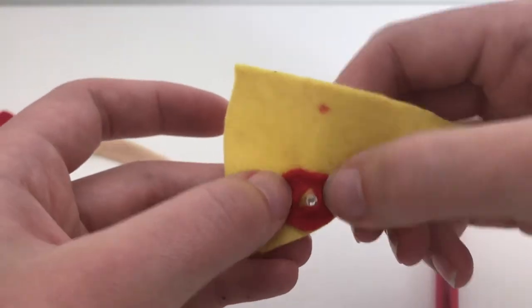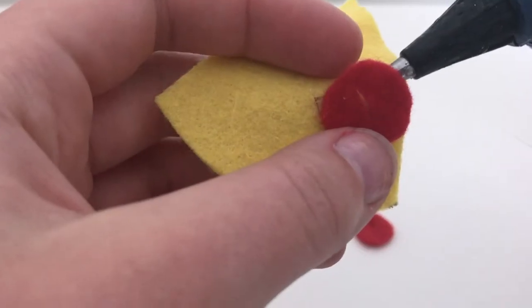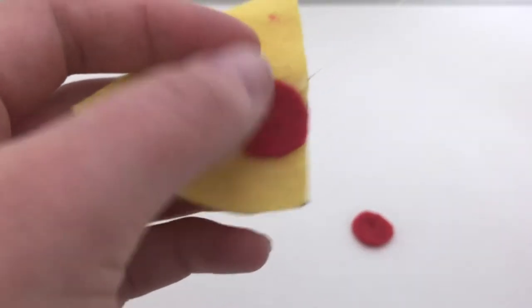Check to make sure all the holes line up properly. Glue the pepperoni slices to the felt, being careful not to fill the hole in with glue. We won't be gluing in the LEDs yet.